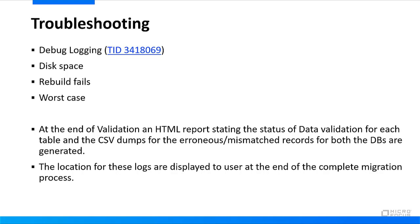At the end of validation, an HTML report states the data validation results for each table, and CSV dumps of erroneous or mismatched records for both databases are generated. If you need to call support, have those files ready. The location of these logs is displayed to the user at the end of the completed migration process.